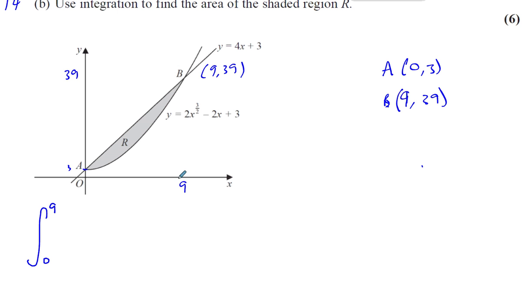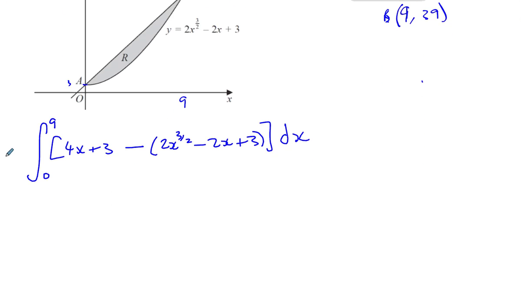So the area under the line minus the area under the curve. So if we take the equation of the line which is 4x plus 3 and we take away from that the equation of the curve which is 2x to the power of 3 over 2 minus 2x plus 3 and we integrate all of that with respect to x between these limits, we will get the area required. That will be the area R.